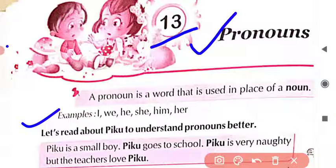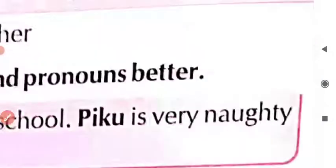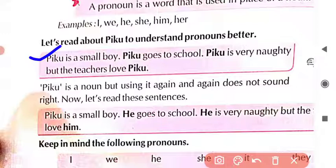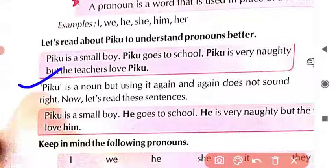Now let's read about Piku to understand pronouns better. Look here: 'Piku is a small boy.' There is a boy whose name is Piku. 'Piku goes to school.' 'Piku is very naughty.' But the teachers love Piku. So Piku is a noun — Piku is a naming word, so it is a noun.